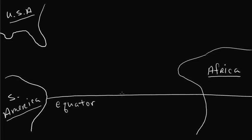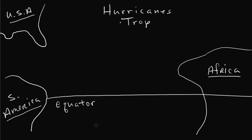Our topic is going to be the topic of hurricanes. Hurricanes go by other names — typhoons, cyclones — and here where we live, it's called hurricanes. The thing about hurricanes is it's just a monstrous storm, and it starts off as something called a tropical storm. These tropical storms feed off of warm, moist air.